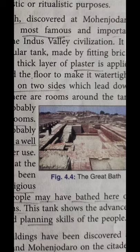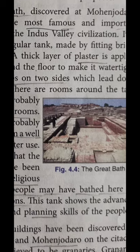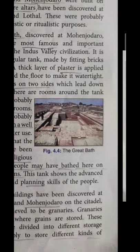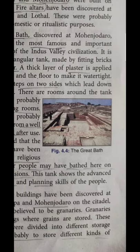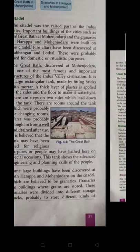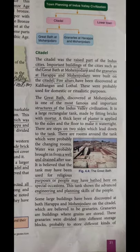The Granaries at Harappa and Mohenjodaro were built at the Citadel. Fire altars were found at Kalibangan and Lothal. The discovery of the Great Bath at Mohenjodaro is one of the most famous and important structures of the Indus Valley Civilization. It is rectangular in shape, like a swimming pool or tank. It is believed the tank may have been used for religious purposes or people may have gathered there on special occasions. These tanks show advanced engineering and planning skills.